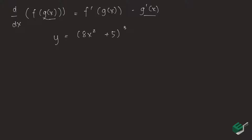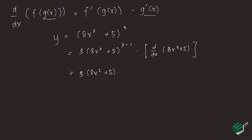Solving for y prime, we first use the power rule to bring down the 3, so that's 3 times 8x squared plus 5, raised to 3 minus 1, times the derivative of g of x — the one inside that function. So we are left with 3 times 8x squared plus 5, raised to 2, times the derivative of the inside function, which is 16x.